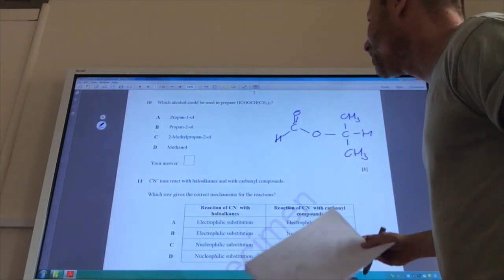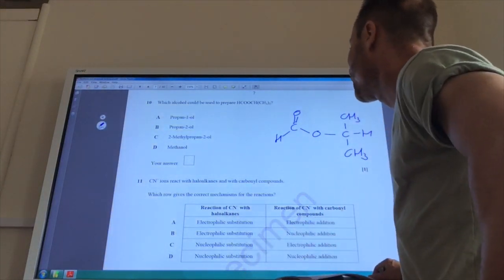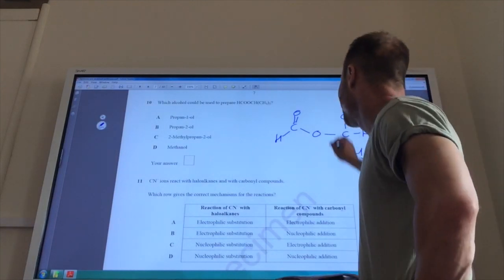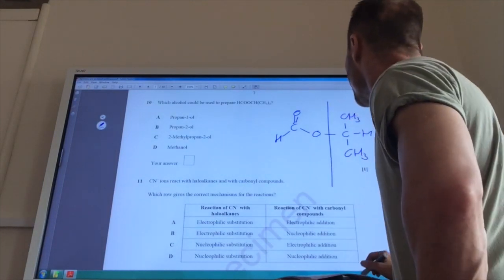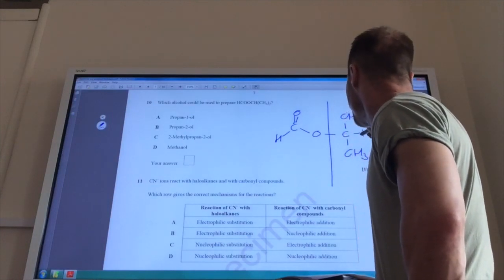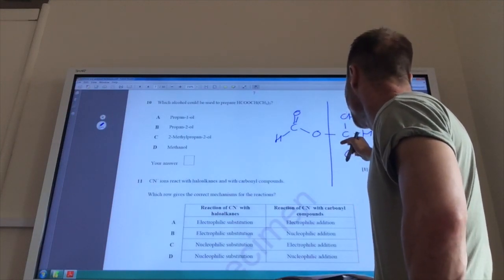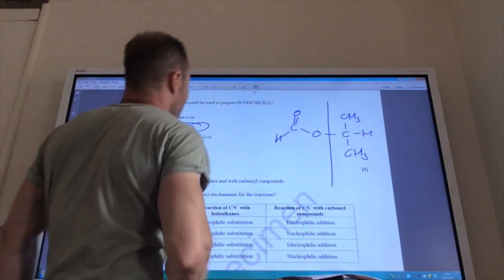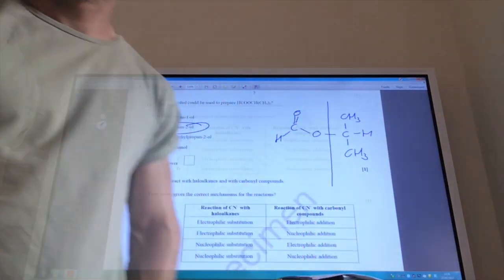Right. So, which alcohol could we prepare to make this compound here? I've drawn it out. You can see it's an ester, which is made by carboxylic acid and an alcohol. So, that's the bond that breaks. So, this is the alcohol that I'd be producing. So, if you stick an OH on the end here, then you can see it's going to be propan-2-ol. So, the answer to 10 is B.